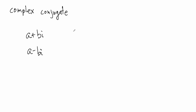So if we have 2 plus 4i, what's the complex conjugate? Well, it's already in standard form — it's a plus bi, some number a plus some number b times i — so the complex conjugate is just going to be 2 minus 4i. Just change the sign of the imaginary part.